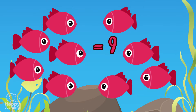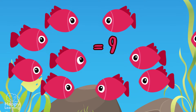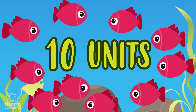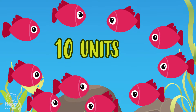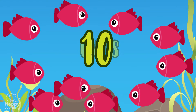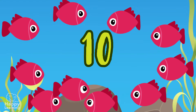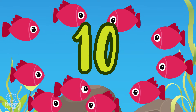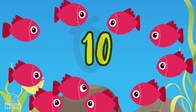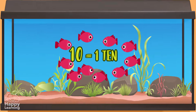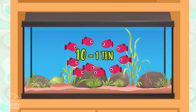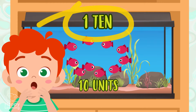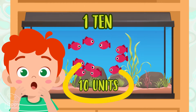Wow, so many fish! One more and we all have ten — ten units. Do you see what happens with the number ten? We now have two digits: the one and the zero. We have a ten, because ten units make a ten. Remember, a ten is a grouping of ten units.